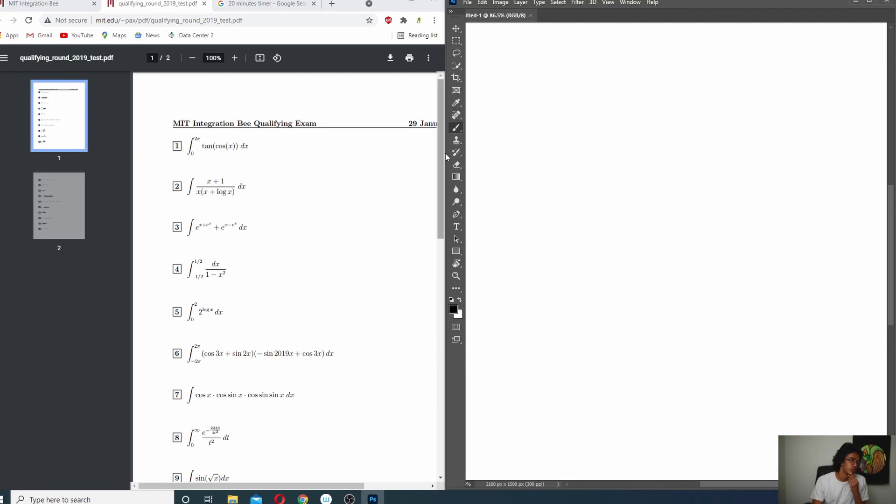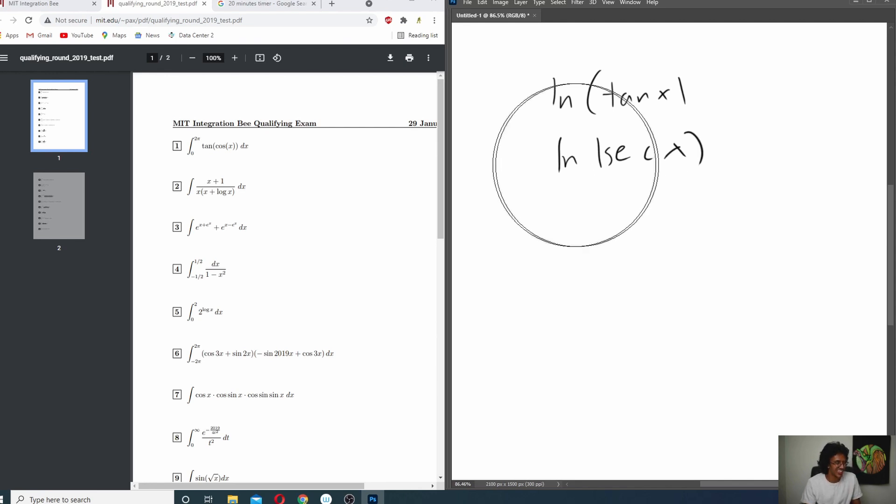Okay, so integral of 0 to 2 pi of tan of cosine x dx. Okay, so essentially what you're doing is you're finding an antiderivative, and I do not remember any of the antiderivatives. Ah, well, what's the antiderivative of tan x, like ln of tan x, ln of secant x, yeah, ln secant x. Ah, I forgot all my calc, this is so sad. Ah, okay, you know, moving on, let's skip that one, and then we might come back to it. I just do not remember my trig stuff, but let's see.